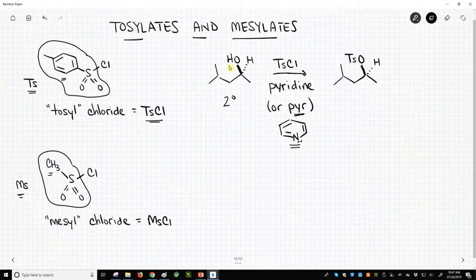So what happens is the H on alcohol is replaced by the TS group. So we get this OTS. This is our tosylate.